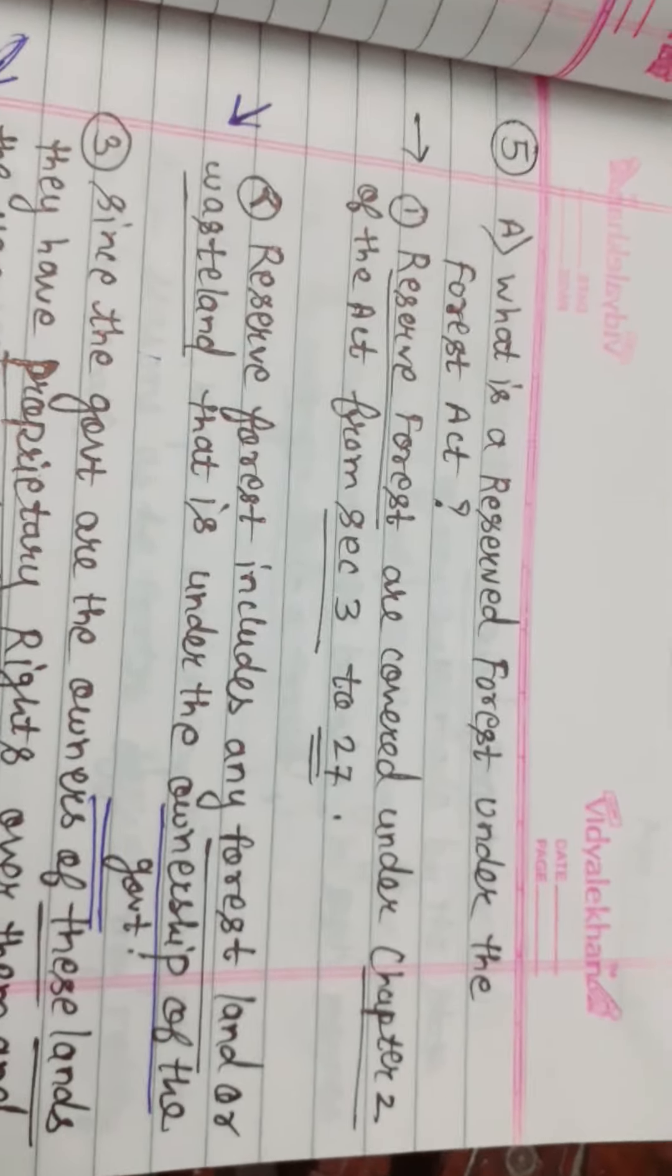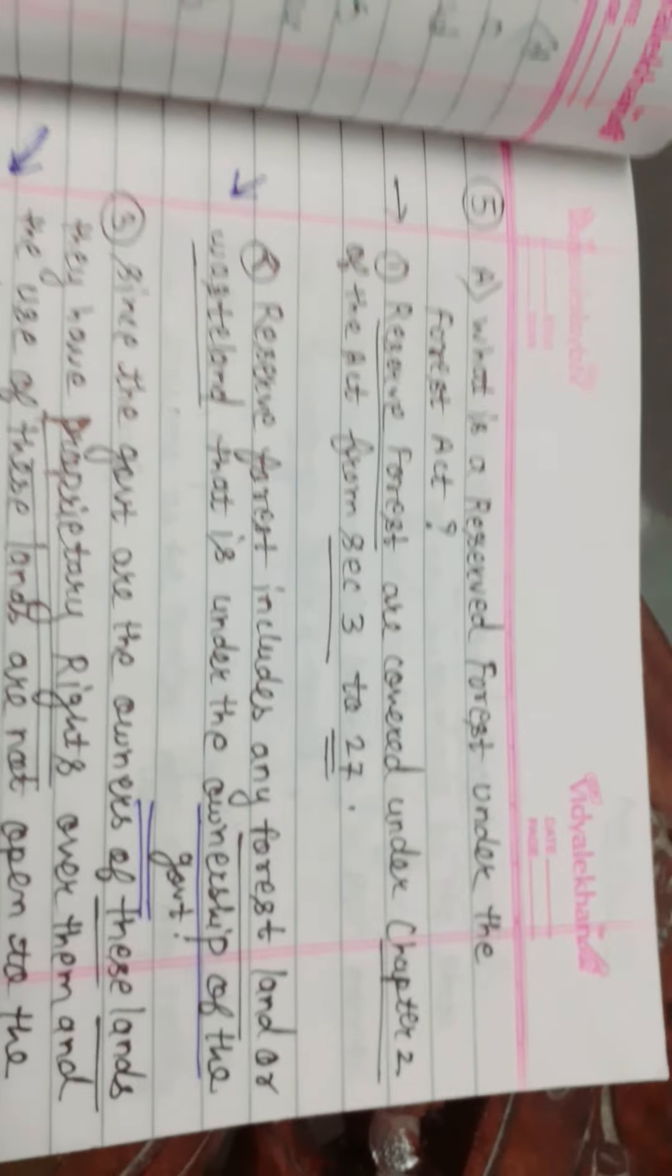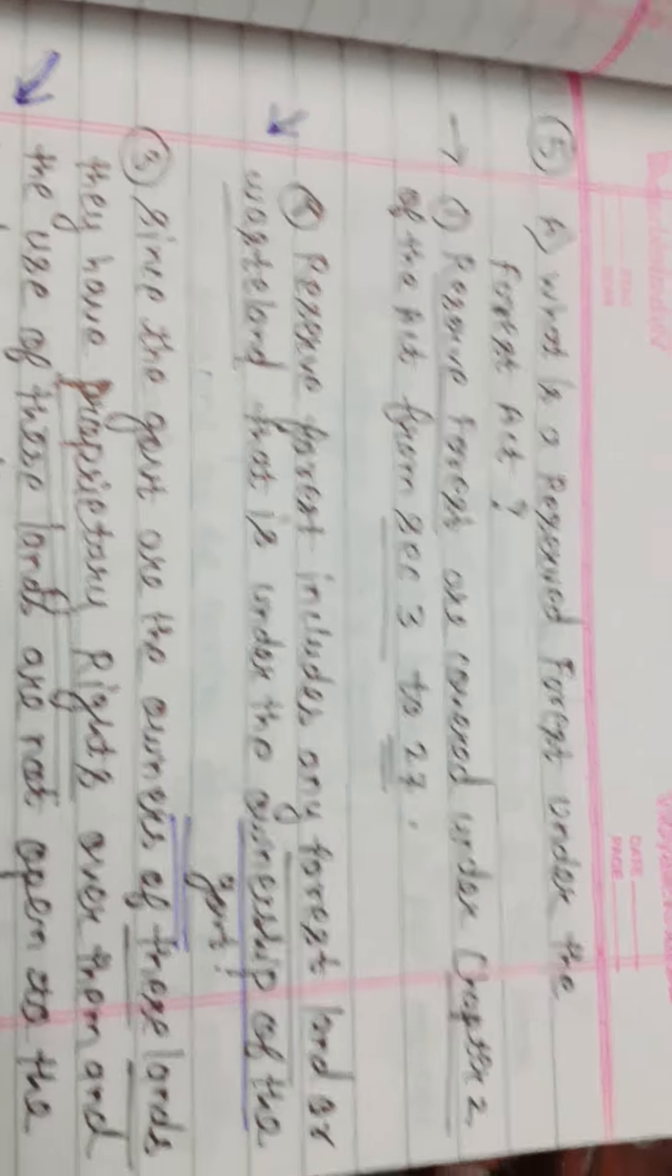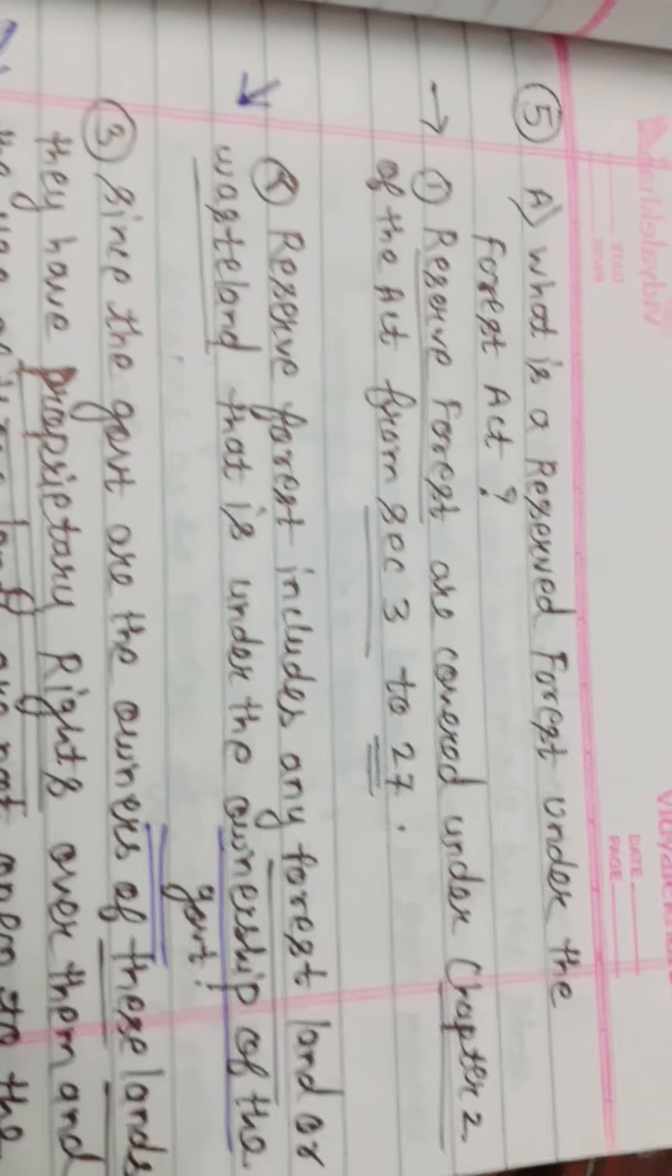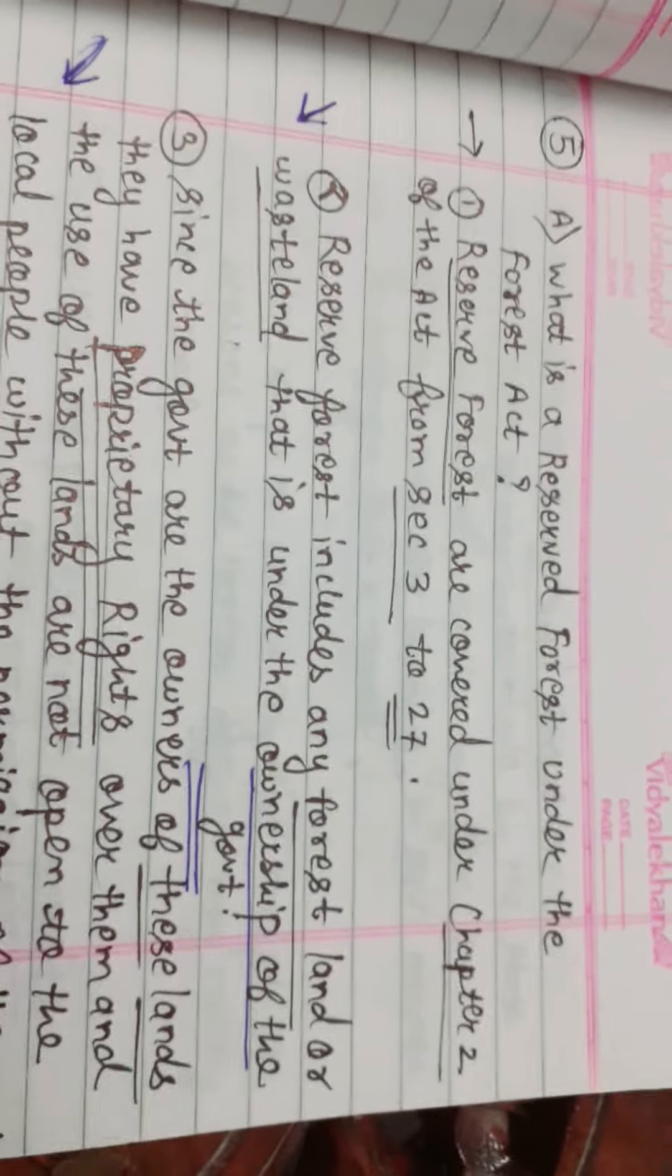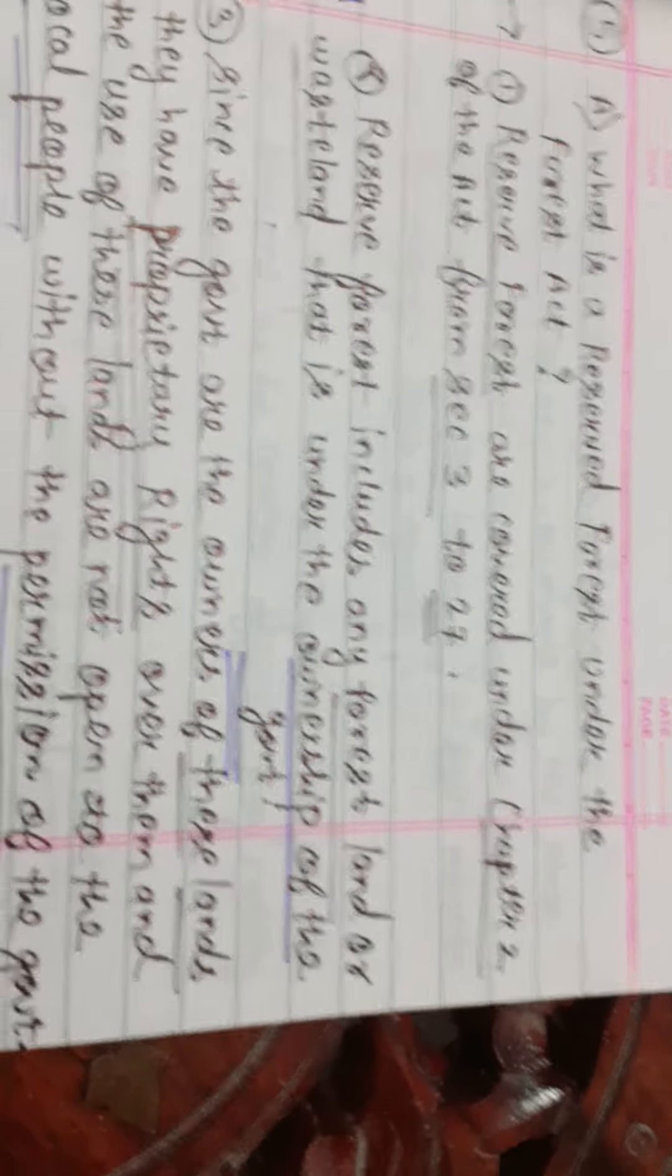What is Reserved Forest under the Forest Act? Reserved forests are covered under Chapter 2 of the Act from Section 3 to Section 27. Reserved forest includes any forest land or wasteland that is under the ownership of the government.